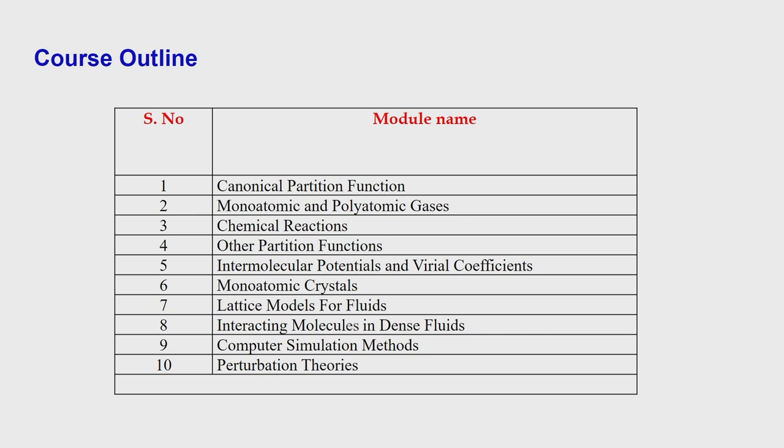Briefly, this is the course outline. These are some of the module names—this does not contain all the module names. We will talk about the canonical partition function in the initial module. Then we will apply this to monoatomic and polyatomic gases. We will see how we can define partition functions to determine equilibrium constants in chemical reactions. We will then delve upon other partition functions, which include other ensembles: NPT, NVT, or muVT, the grand canonical ensemble, the canonical ensemble, and isothermal-isobaric ensemble. Then we talk about intermolecular potential, the LJ potentials, and finally the virial coefficients.